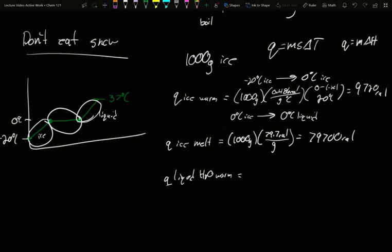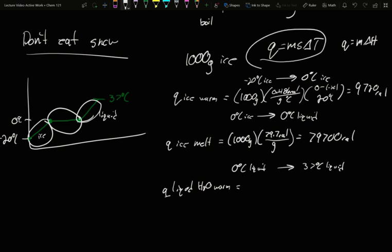Our last step for liquid water: I've achieved liquid water at zero degrees Celsius liquid, and we're taking it up to body temp, 37 degrees Celsius liquid. I have a temperature change. I start liquid, I end liquid. I am in a phase, so I can use Q equals ms delta T. My mass is still 1,000 grams. My S value for liquid water is one calorie per gram degree Celsius, that's the definition for the calorie. My delta T, my final temp is 37, my starting temp is zero, so 37 minus zero is 37 degrees Celsius. To heat up that liquid water requires 37,000 calories.